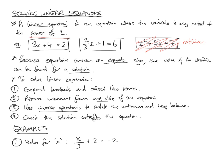To solve linear equations: Step 1, expand any brackets and collect like terms, if needed. Step 2, remove unknowns from one side of the equation. You can't find what the unknown is if you've got the unknown on both sides. You need to get the unknowns on one side and have them on the other. Step 3, use inverse operations to isolate the unknown and keep balance. You want to end up with your equation saying, for example, x is equal to 2, because that's the solution.